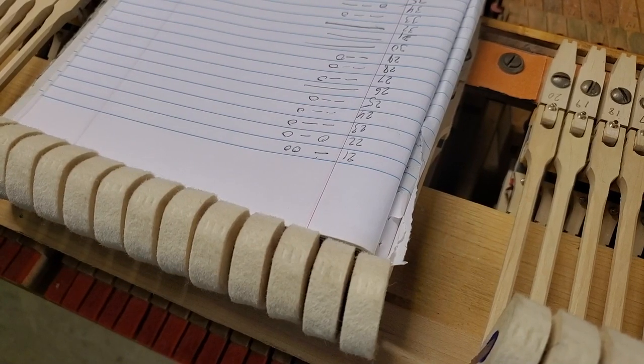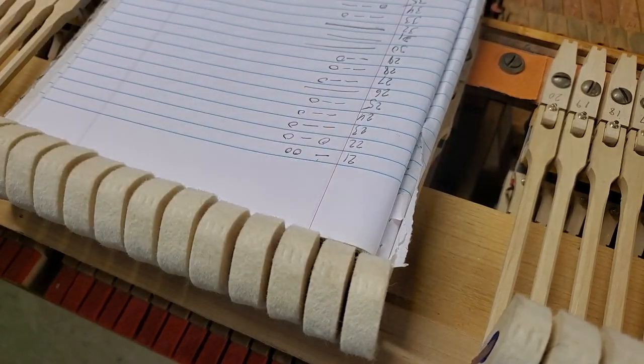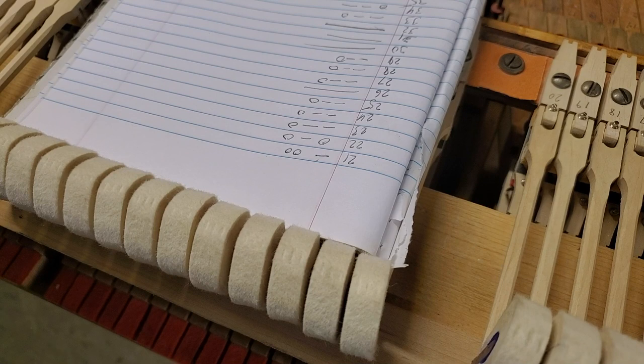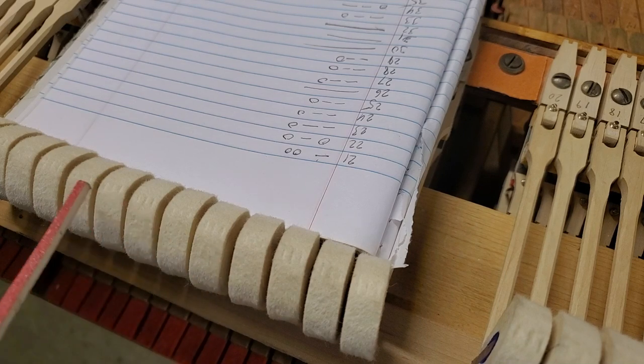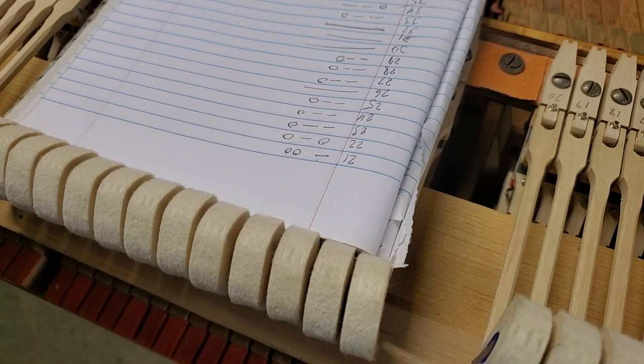All right, so I have the action on the bench and I have my hammer code sheet. I'm just going to remove some felt. And I hope you can see in the video the groove lines that were created by the key pounder. So helpful.